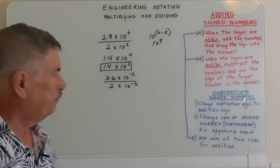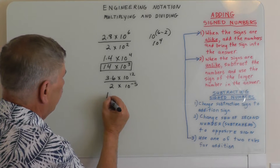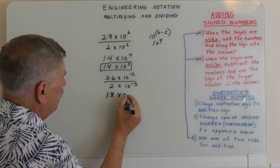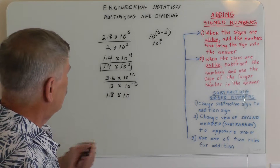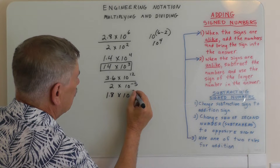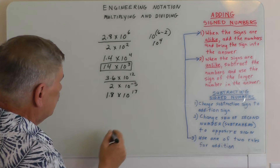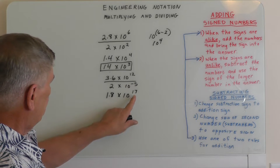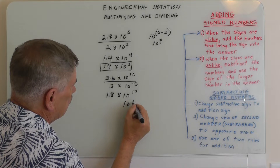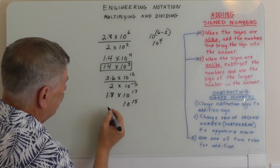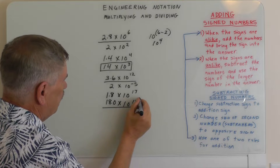Let's look at this next example. We're going to take 3.6 and divide it by 2, which gives us 1.8 times 10. Then 12 subtract minus 5 is going to give us 17. We want to bring down 2 places, so this is going to make it 10 to the 15th. That gives us 180 times 10 to the 15th.